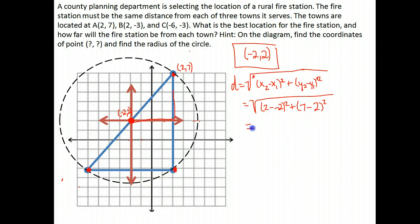We subtract those and simplify. -2 minus a negative 2 becomes 2 + 2. 2 + 2 is 4. 7 - 2 is 5.